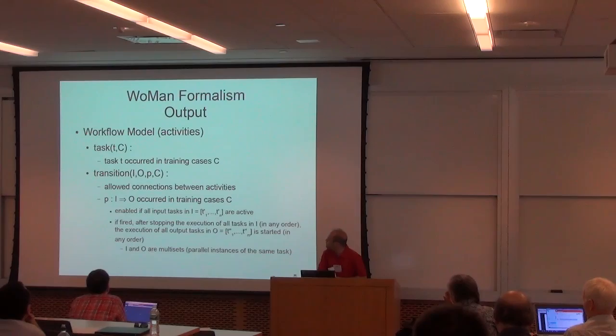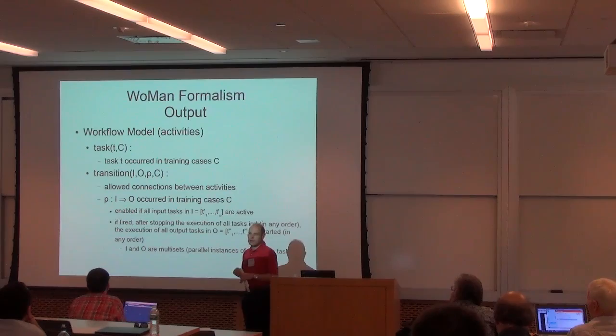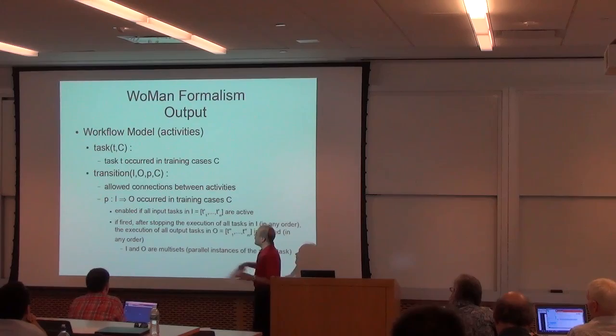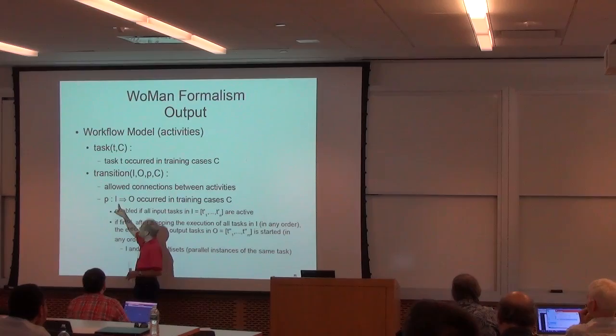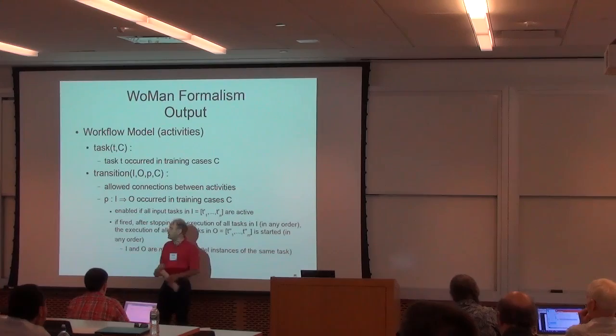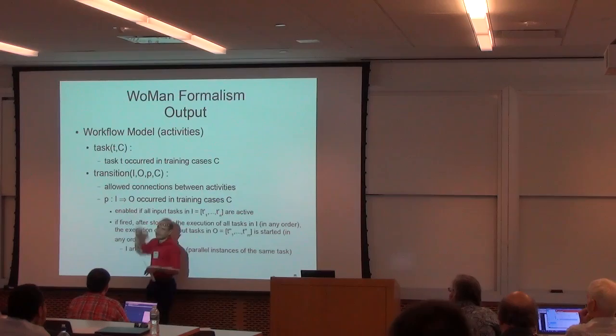As regards the model, the basic model we propose is based on basically two predicates: a predicate describing the tasks that may be involved in the process, and the most important predicate which can be seen as a rule that says that if some activities in this set have been accomplished, then they enable the execution of other activities in this other set.